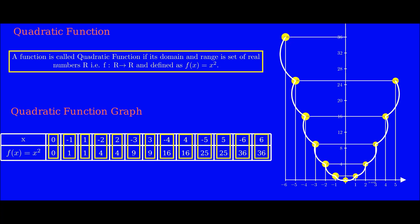So you can see that for a positive value and for a negative value of x, the value of f(x) is the same, because it is squared.